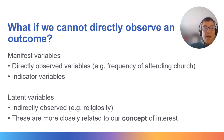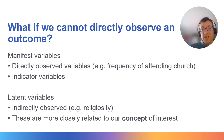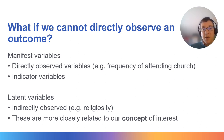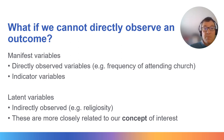The manifest variables are those variables we can observe in our data set. For instance, we might have a battery of questions which ask about frequency of attending church, or how often someone prays, or perceived importance of God in their life.